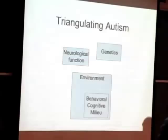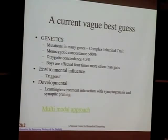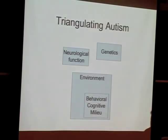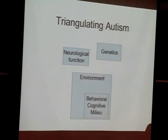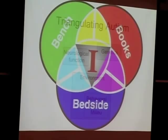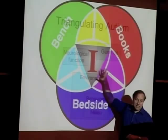Let me describe the approach we're taking as part of the Boston Autism Consortium, which includes people at Children's Hospital, MIT, MGH, the Broad, Tufts, and BU. We're approaching it by looking at neurological function, genetics, environment, and behavioral and cognitive milieu. What's bringing all this together is an intersection between wet biology techniques, what we know about gene-process interactions, and clinical measures — with information as the central mechanism for triangulating this process.